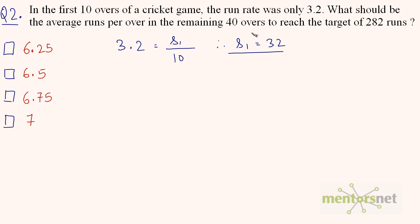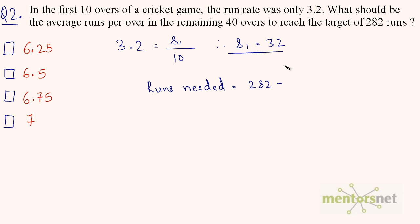We know the runs scored in the first 10 overs. Now we need to find what average runs per over are required in the remaining 40 overs to reach the target of 282 runs. The runs still needed equal 282 minus 32, which is 250. Let's call that S2.